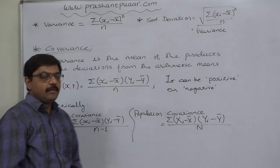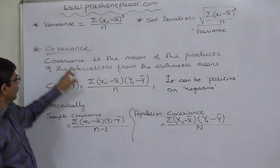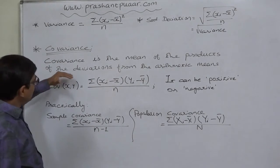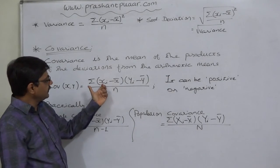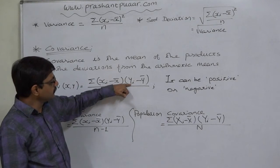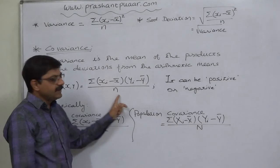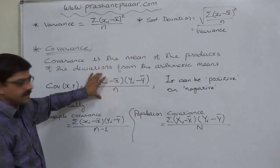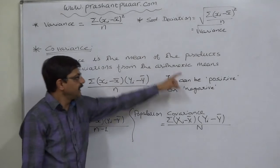According to his development, we can conclude that covariance is the mean of the products of the deviations from arithmetic means. That means for this purpose we have to first find out x minus x̄ — the deviations of variable x from its arithmetic mean — and deviations of variable y from its arithmetic mean. Then take the product, then summation, and then divide by the number of observations n. So by definition, covariance is the mean of the products of the deviations taken from the arithmetic means.